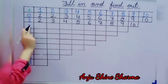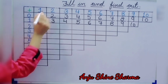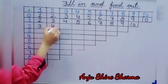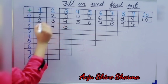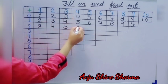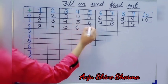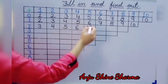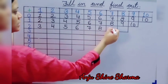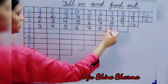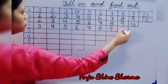Next 2. 2 plus 1 is equal to 3. Then 2 plus 2 is 4. 2 plus 3 is 5. 2 plus 4 is 6. 2 plus 5 is 7. Then 2 plus 6 is equal to 8. 2 plus 7 is equal to 9. 2 plus 8 is equal to 10.